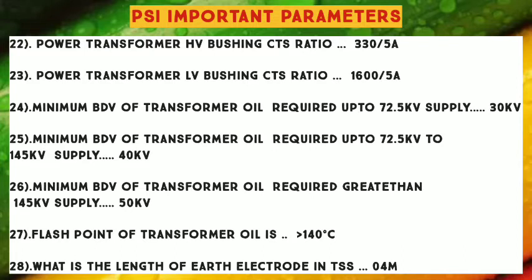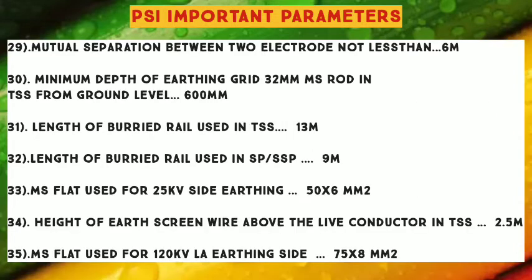Number 26: Minimum BDV of Transformer Oil required greater than 145 KV supply — 50 KV. Number 27: Flash Point of Transformer Oil — greater than 140 degrees Celsius. Number 28: Length of Earth Electrode in TSS — 4 Meters. Number 29: Mutual Separation between two electrodes — not less than 6 Meters. Number 30: Minimum Depth of Earthing Grid 32 mm MS Rod in TSS from ground level — 600 Millimetres.